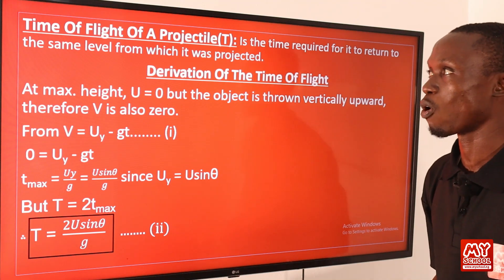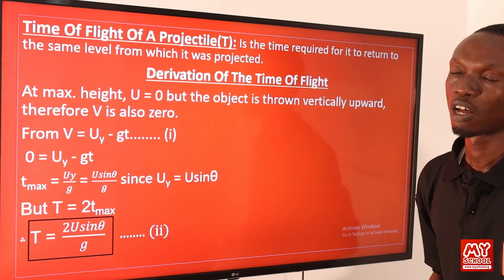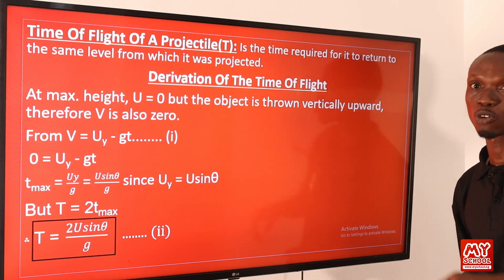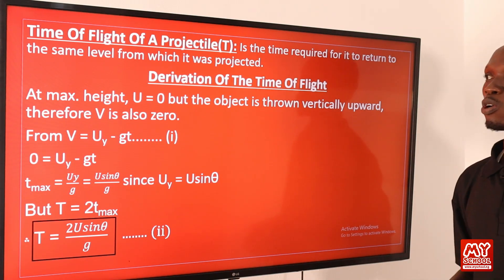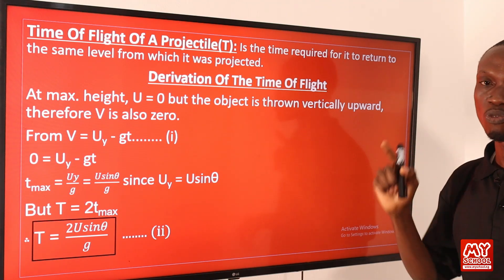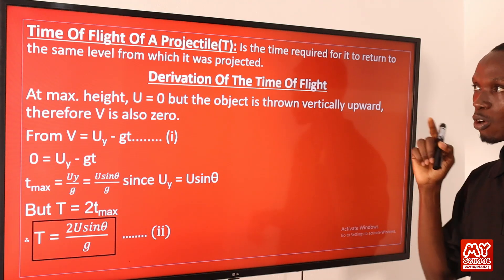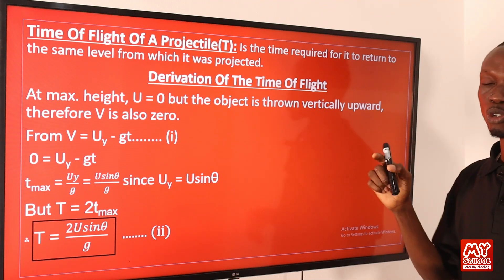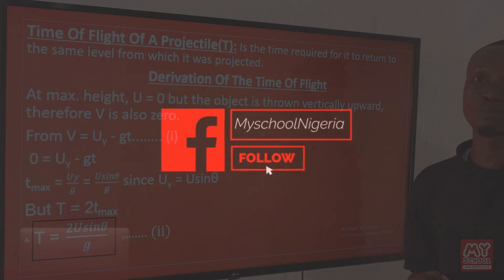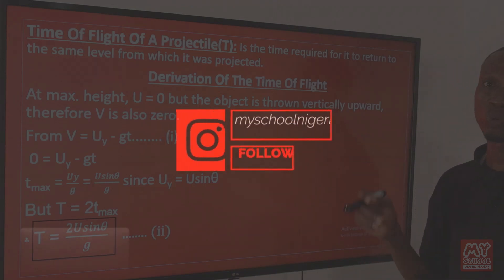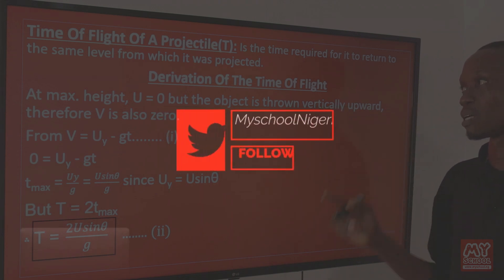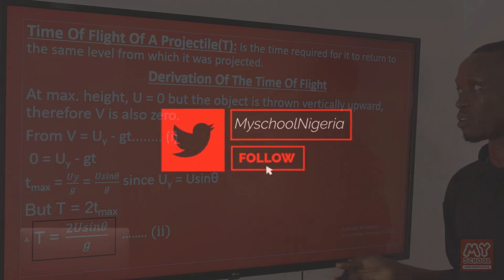Time of flight of a projectile is defined as the time required for the projectile to return to the same level from which it was projected. Time of flight is denoted by capital letter T.